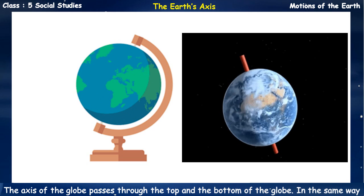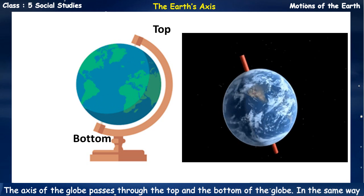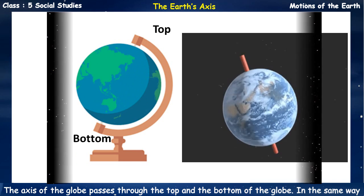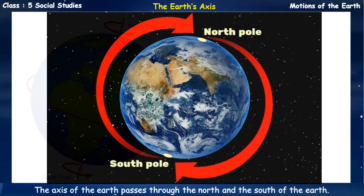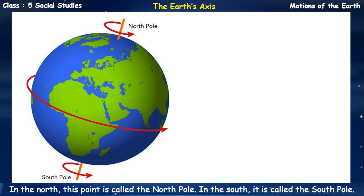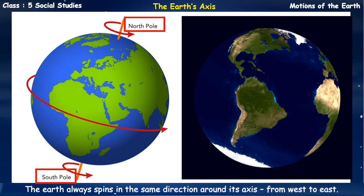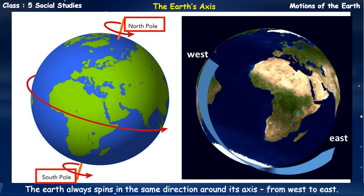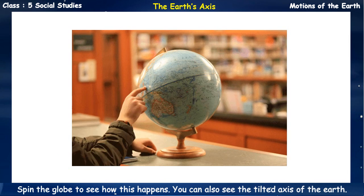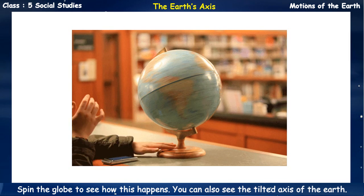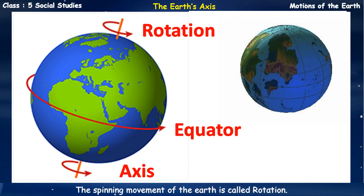The axis of the globe passes through the top and the bottom of the globe. In the same way, the axis of the Earth passes through the north and the south of the Earth. In the north, this point is called the North Pole; in the south, it is called the South Pole. The Earth always spins in the same direction around its axis, from west to east. Spin the globe to see how this happens. The spinning movement of the Earth is called rotation.